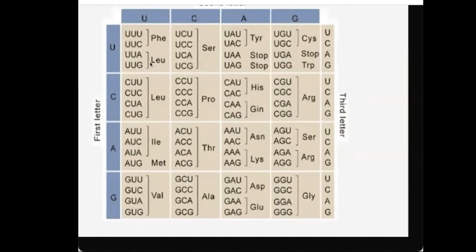For the amino acid leucine, there are two different codons that both code for leucine. It doesn't matter whether you have UUA or UUG — as long as you have U and U in the first two positions and either an A or a G at the third position, you're coding for the same amino acid. This is important when we talk about translation and the consequences of mutation.